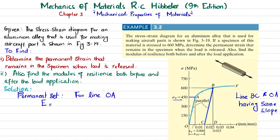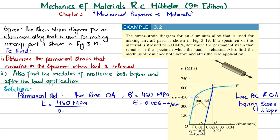We can find this modulus of elasticity E for line OA. The stress at point A is 450 MPa and the strain is 0.006 mm/mm. So plugging in: E = 450 MPa divided by 0.006 mm/mm, which gives E = 75 GPa. Since both lines have the same slope, line BC will also have the same modulus of elasticity.